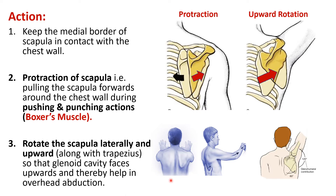The third action is that it rotates the scapula upwards or laterally, so the glenoid cavity faces more upwards. This is done along with the help of the trapezius muscle. Here we can see the scapula is rotated upwards and the glenoid cavity is facing upward. This action is needed when we do abduction over the head.